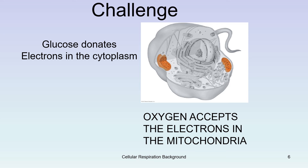In cellular respiration, there are three significant steps. The first occurs in the cytoplasm of the cell, and the second and third occur in the mitochondria. During the first step, electrons are stripped from the glucose, and this electron stripping continues in the second step in the mitochondria. Those electrons from the first and second step are then used in the third step, which is also in the mitochondria.